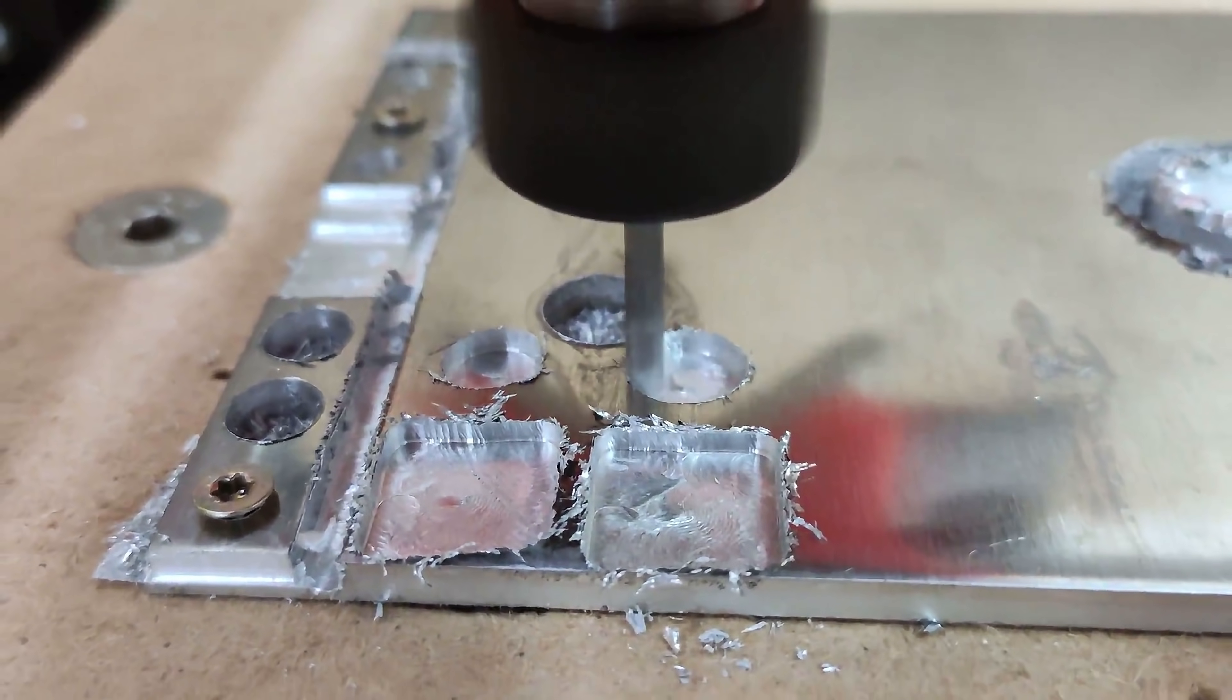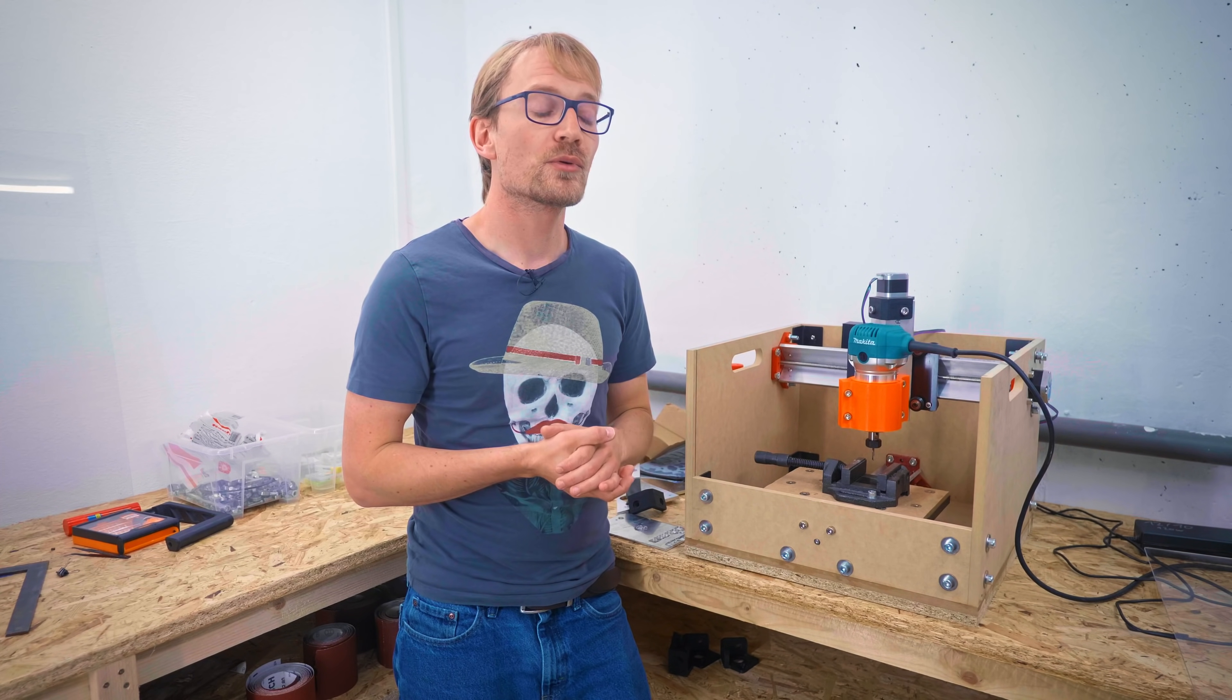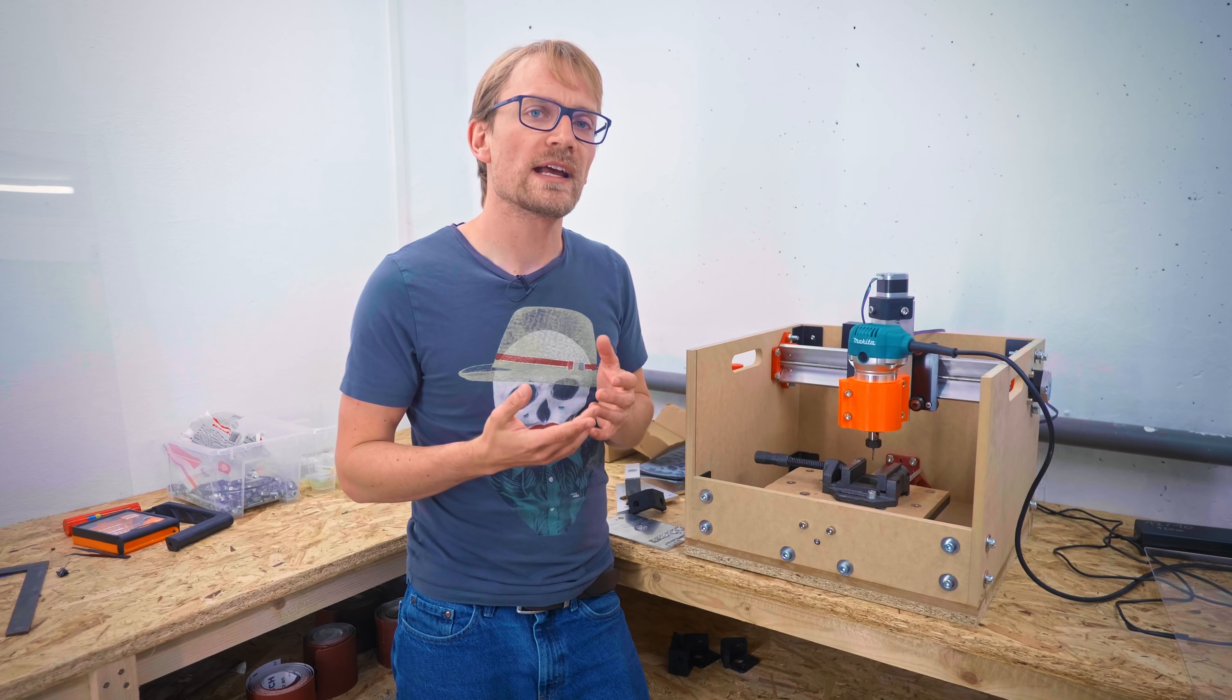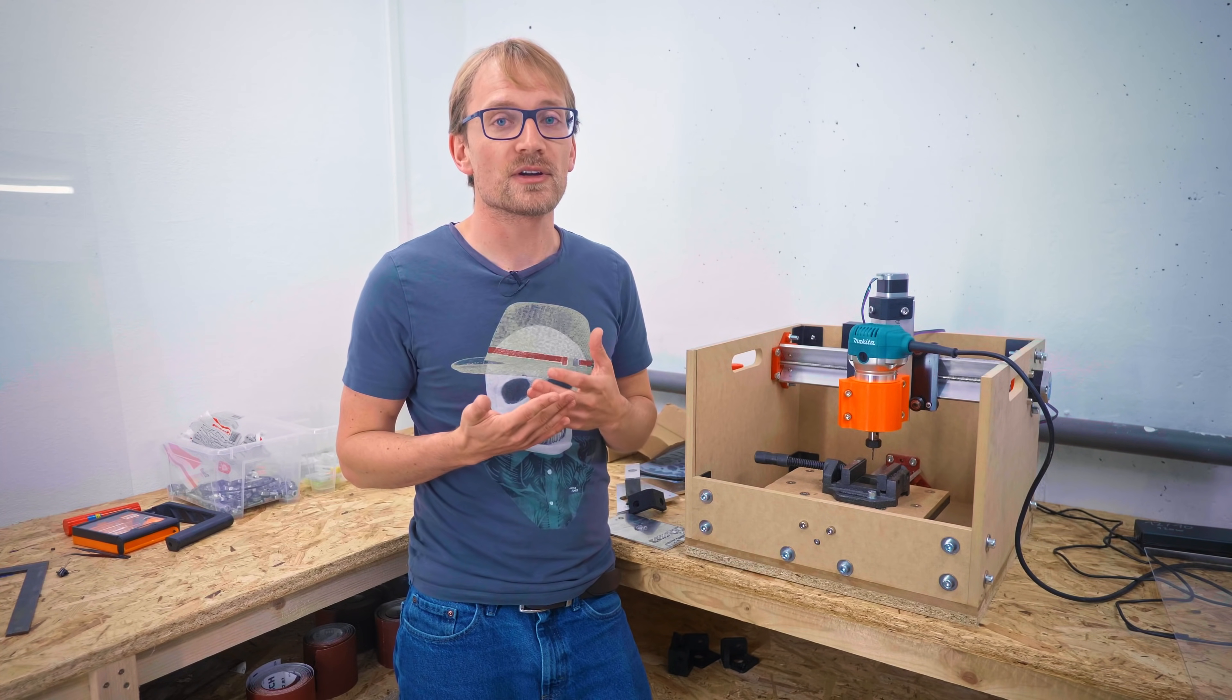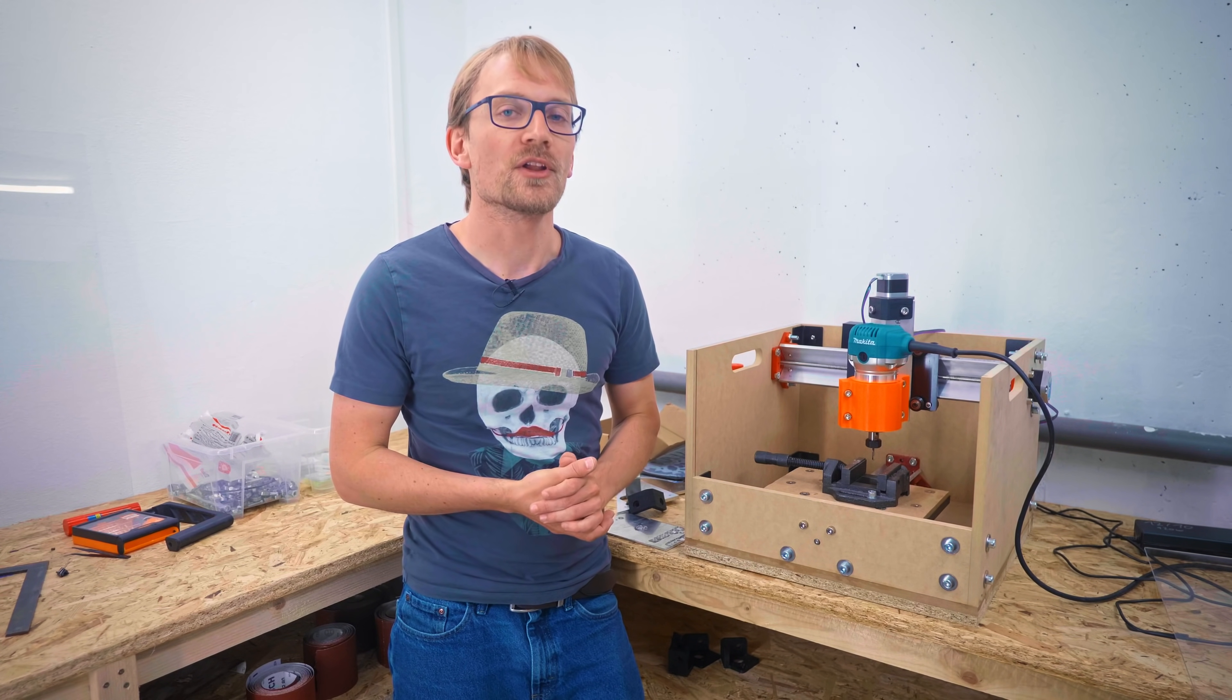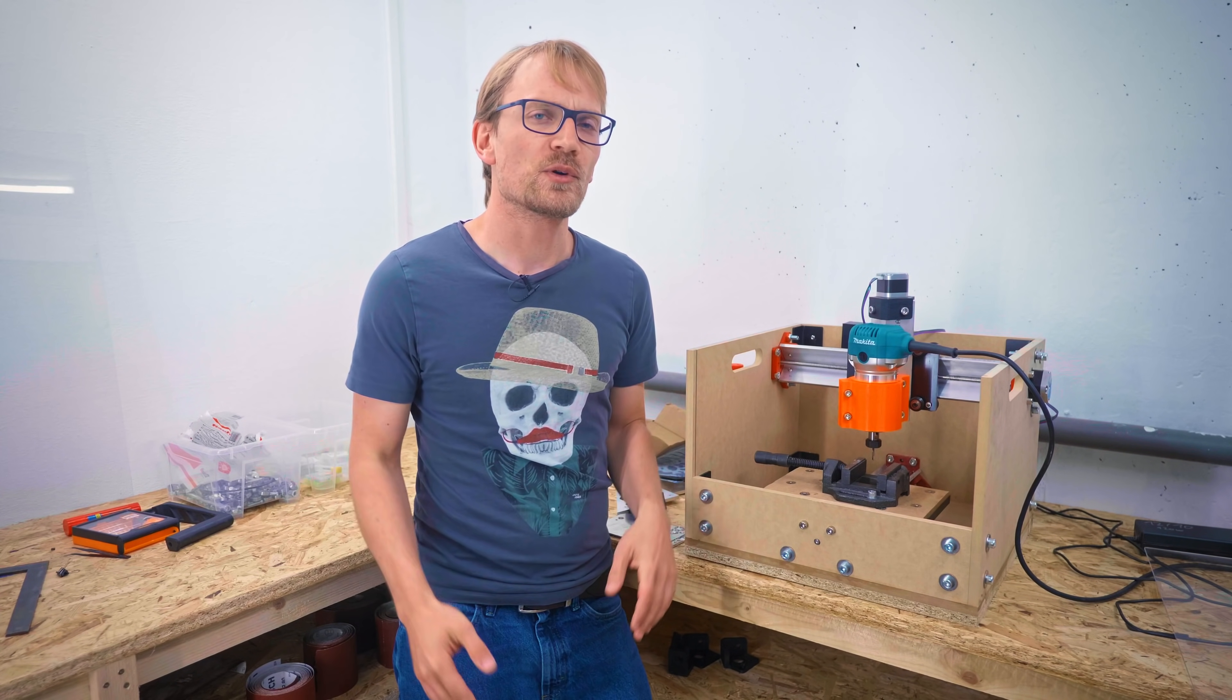But I think the biggest upgrade was actually free, and that was changing away from using ESTLCAM or Kiri:Moto to doing CAM in Fusion 360. The recommended CAM for Bob is Kiri:Moto, which is now available standalone, but if I remember correctly, it used to be only available as a plugin for Onshape. And Onshape changed the license term so that any form of commercial use, including even what I'm doing with it, requires you to buy a license, starting at fifteen hundred dollars per year. That's as much as buying an entirely new CNC router every year, so it's kind of pointless.